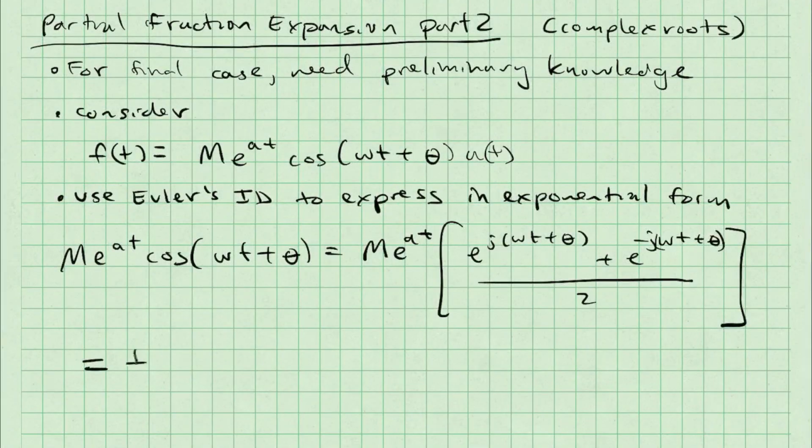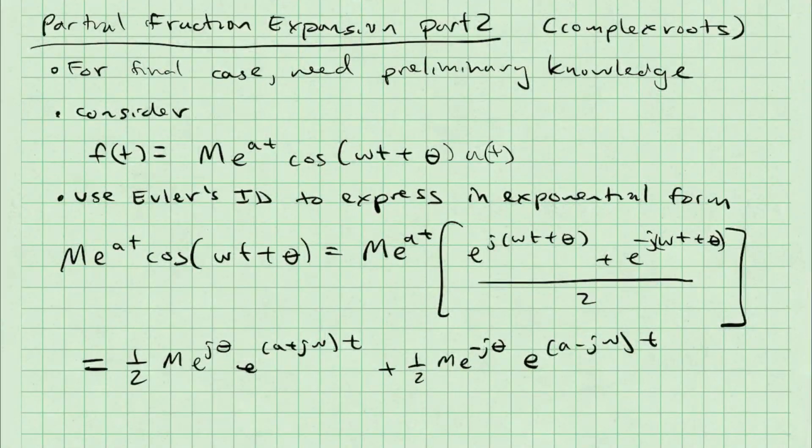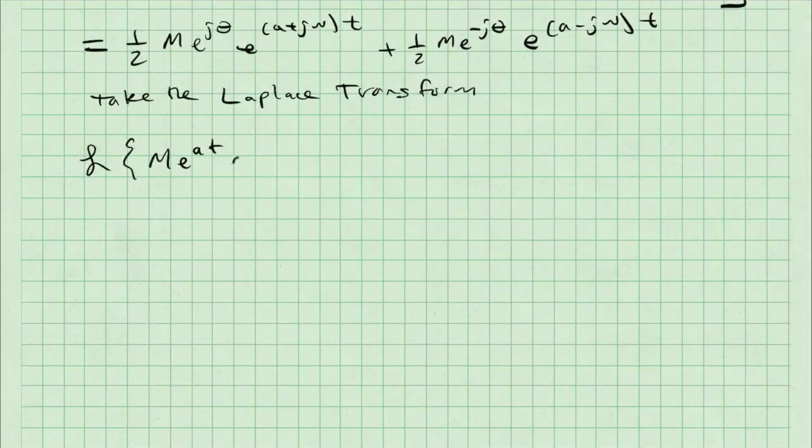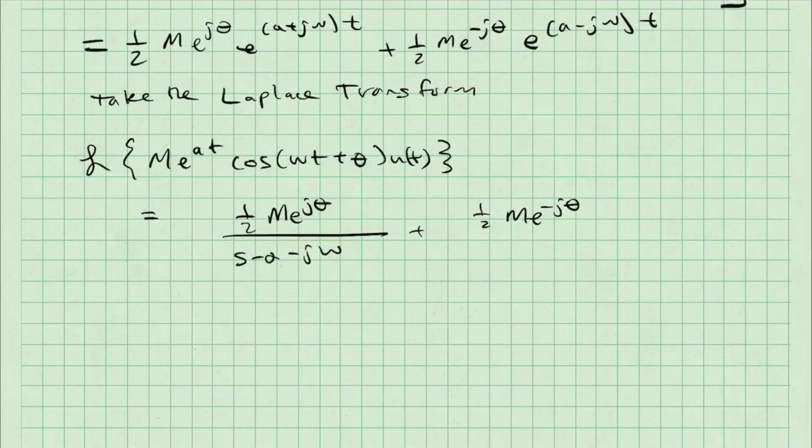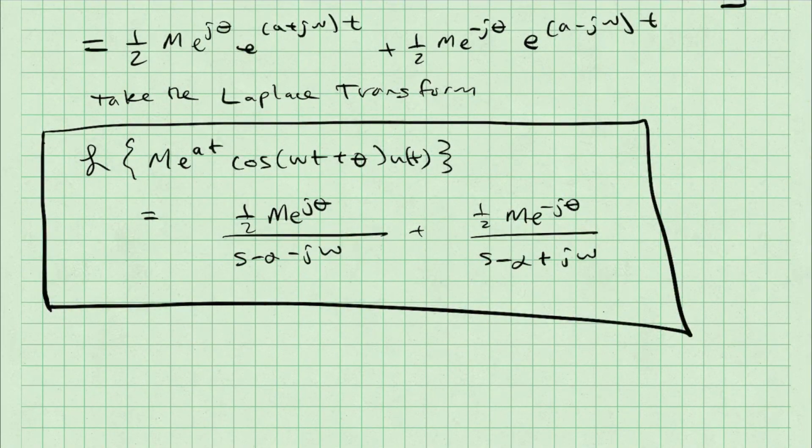I can decompose that into one half m e to the j theta e to the a plus j omega t plus one half m e to the minus j theta e to the a minus j omega t. If we take the Laplace transform of this, we get one half m e to the j theta over s minus a minus j omega plus one half m e to the minus j theta over s minus a plus j omega. I'm going to call this transform pair star.